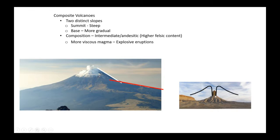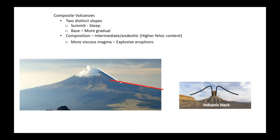Here you have this image — this is a volcanic neck. It's a stack that sticks up out of the ground. What it actually is, is the solidified conduit of an eroded volcano. At one time there was a full, active volcano here. Various eruptions probably occurred throughout its life. The magma got stuck in the conduit, the volcano became extinct, it eroded away, and you're left with this spire. Shiprock is a classic example of this. Truly fascinating things.